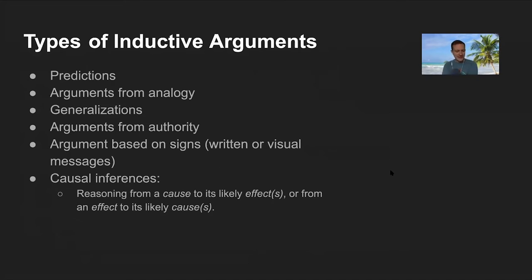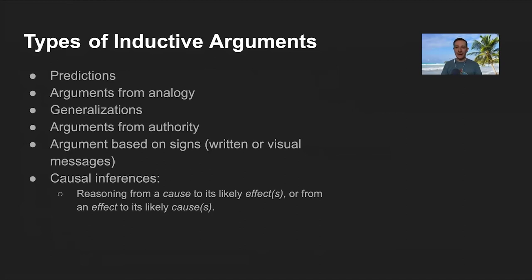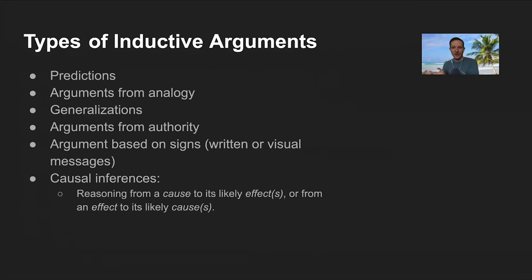Arguments based on signs — written or visual messages — are inductive. If a sign says 'homework is due on Sunday,' that gives you lots of reason to think it is, but doesn't prove it with necessity. You could have misread it, the author could be lying, or they could have made a mistake. Any argument hinging on written or visual communication is inductive because the message gives reason for a conclusion but doesn't prove it with necessity.